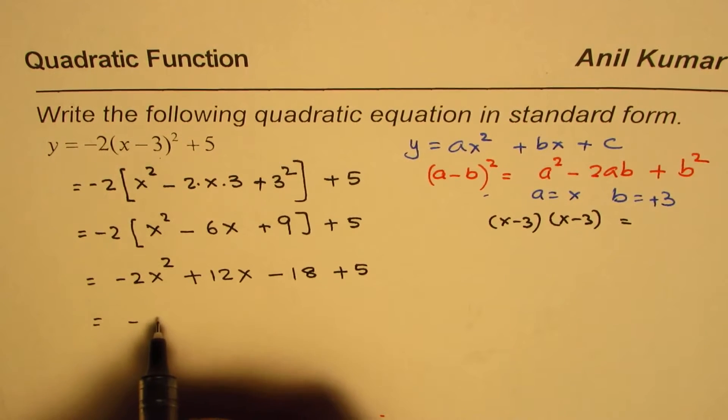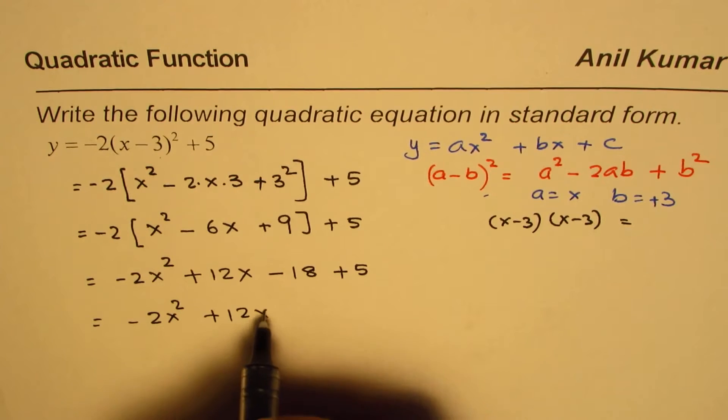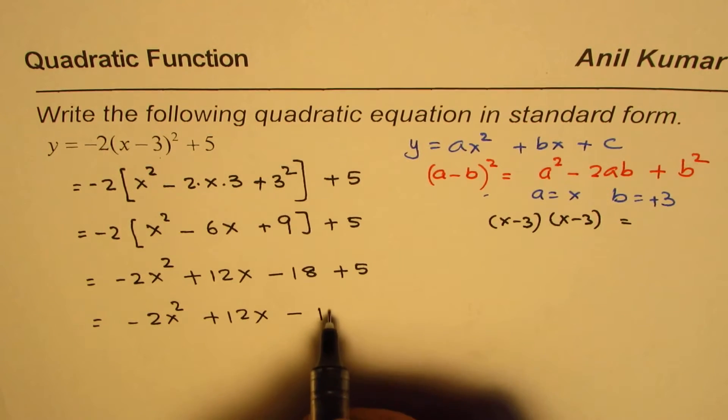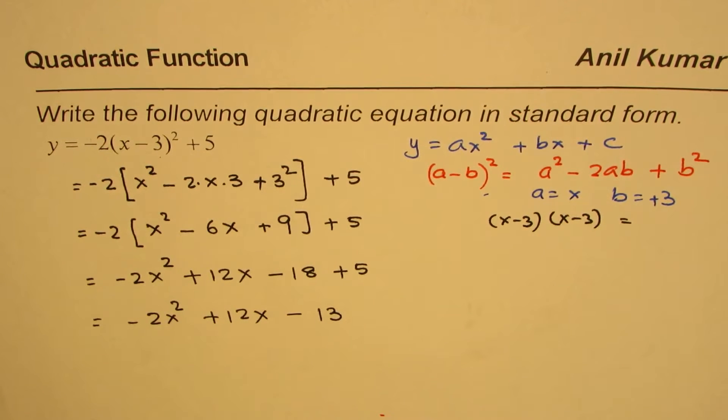And that gives you minus 2x square plus 12x minus 18 plus 5 is minus 13. And that is the standard form of quadratic function.